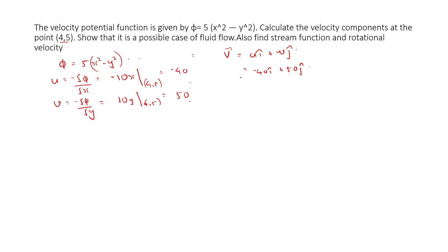And we need to check whether this is a possible case of fluid flow. For a possible case of fluid flow, ∂u/∂x + ∂v/∂y = 0. So ∂u/∂x = -10 plus ∂v/∂y = 10. So this equals 0.